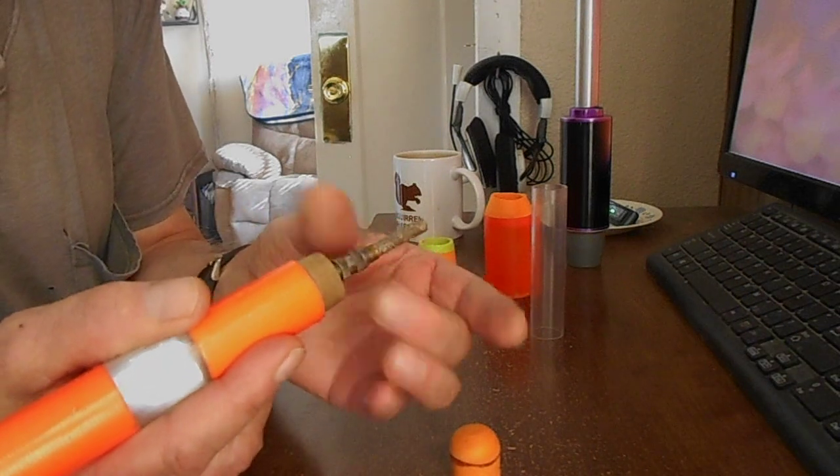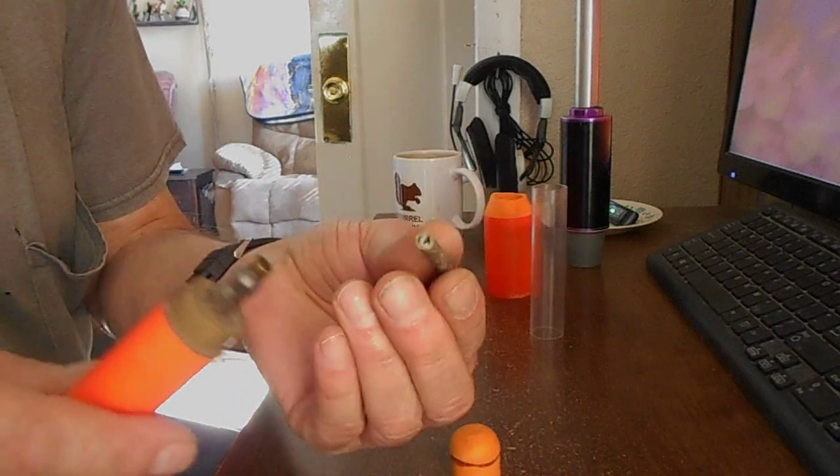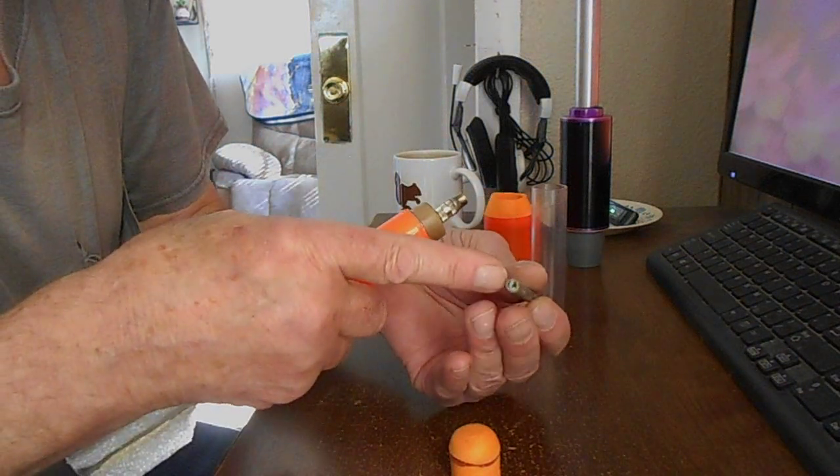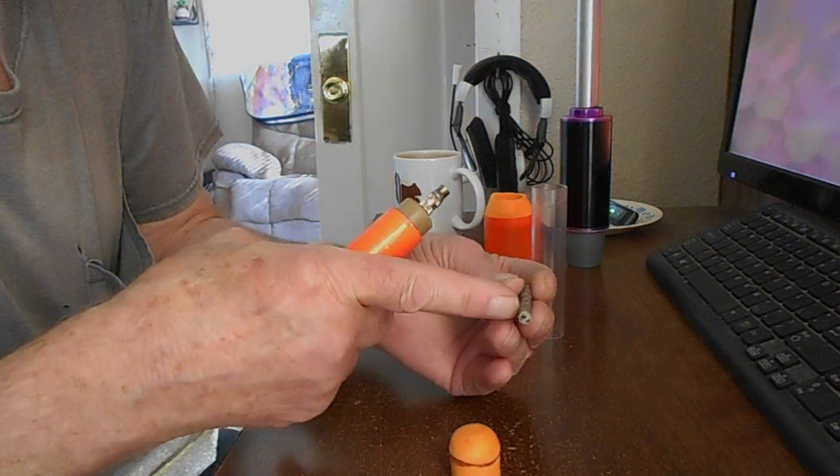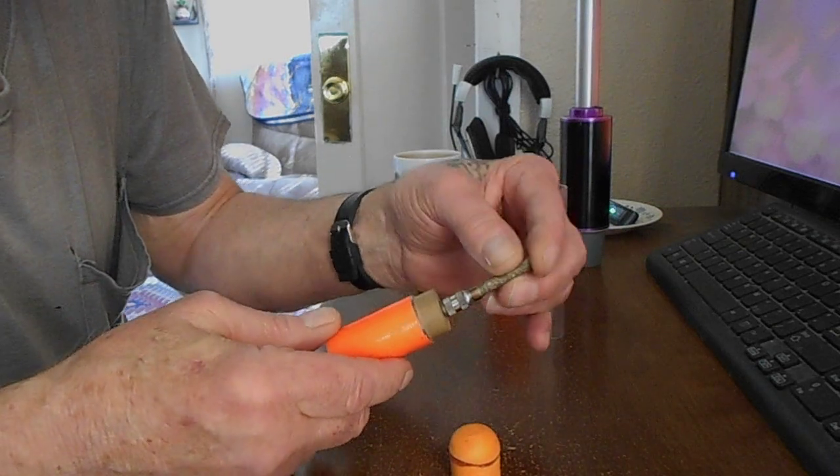This is made out of a Schrader valve. And then you get your firecracker in here. What happens is the fuse is stuffed down in this about maybe a quarter of an inch or so of paper there. And the fuse sits down in there.